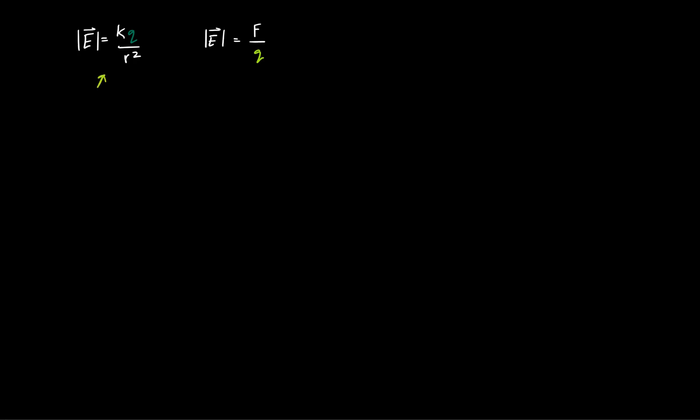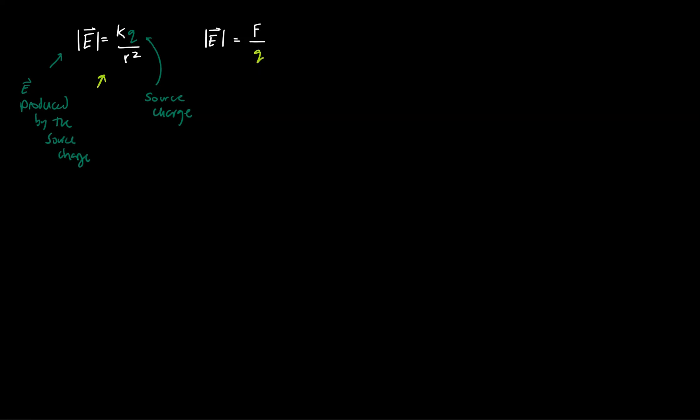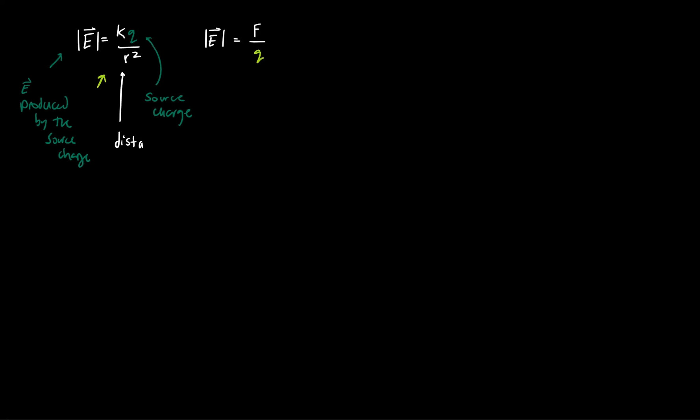So this first equation here is in terms of the source charge. This q here is a source charge, and this E is an electric field produced by the source charge. This r here is the distance of separation between a source charge and some test charge that it's affecting. So there still has to be a test charge present for you to use this formula to calculate the magnitude of the electric field.